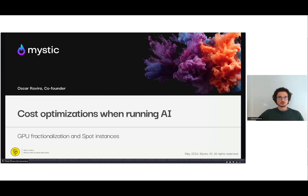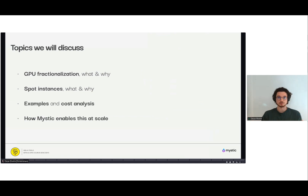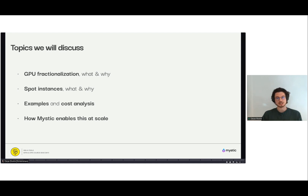Hi everybody, I'm Oscar, one of the co-founders of Mystic AI. Today we're going to be talking about several things, specifically something I'm very passionate about: how do we optimize the cost of running AI models. We'll be covering two main technologies to achieve that — GPU fractionization and spot instances — as well as examples and cost analysis of how much money customers are able to save by leveraging these two technologies.